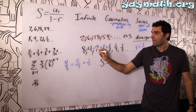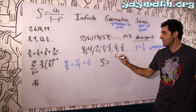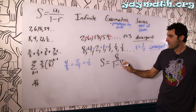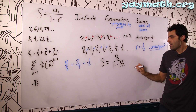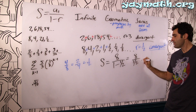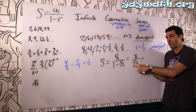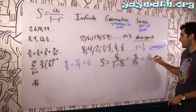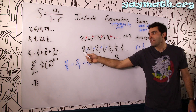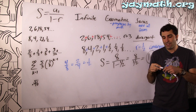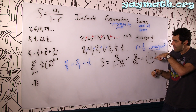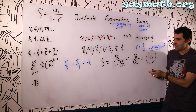Let's prove it. First term is 8, over one minus r, which in this case is one half. So this becomes 8 over one half. How many times does one half go into 8? 16. That's the sum of this infinite geometric series.